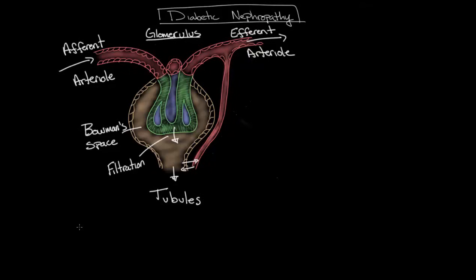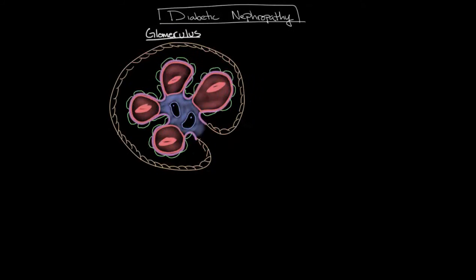One last structure to point out in this diagram is this vessel coming off the efferent arteriole. This vasculature actually wraps around the tubules of the nephron and contributes to the reabsorption and secretion of solutes. To add to this diagram, let's imagine we took a cross section of this glomerulus and looked at it on its end — it would look something like this. We can use this diagram to better depict some of the important structures within the glomerulus. Here you can see the capillary vessels, each with a red blood cell drawn in to remind you that it's a blood vessel.